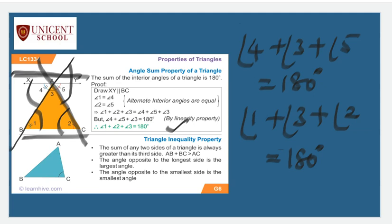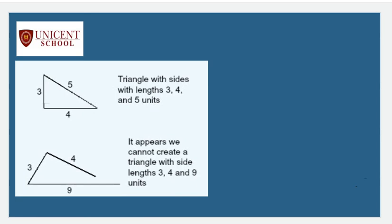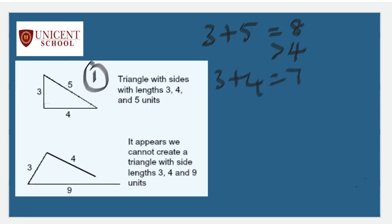The next property is the triangle inequality property: the sum of any two sides of a triangle is always greater than the third side. Also, the angle opposite to the longest side is the largest angle, and the angle opposite to the smallest side is the smallest angle. For the first triangle with measurements 3, 5, and 4: 3+5=8 > 4, 3+4=7 > 5, and 5+4=9 > 3. The inequality property is satisfied, so construction of this triangle is possible.